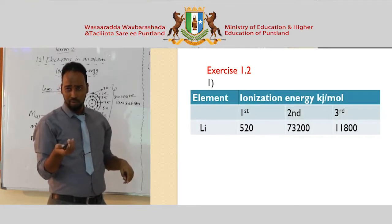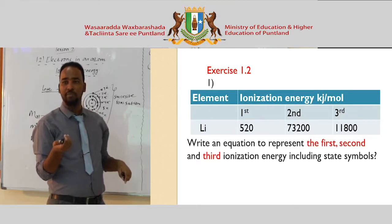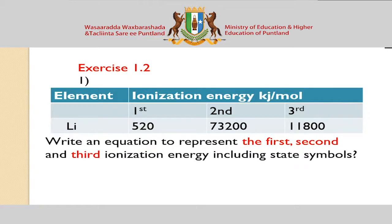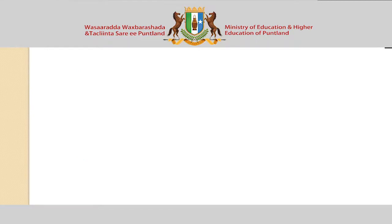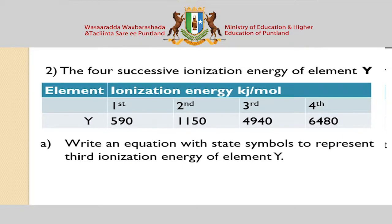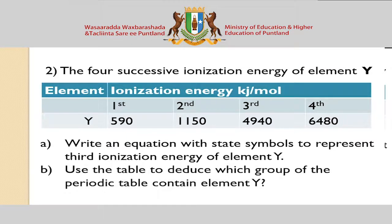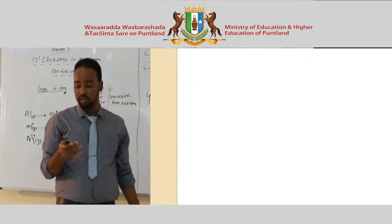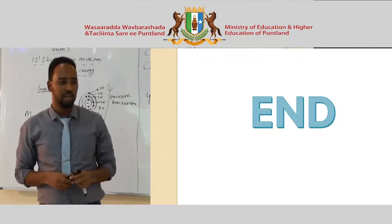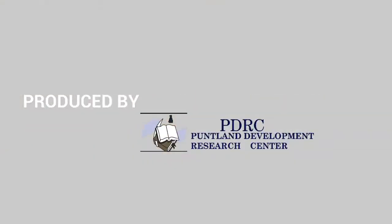Now for practice questions: write the equation for the first and second ionization energy of lithium, including state symbols. Use the successive ionization energy table to find which group of the periodic table element Y belongs to. The first ionization energy values are given — identify the large jump to determine the group. Assalamu alaikum wa rahmatullahi wa barakatuhu.